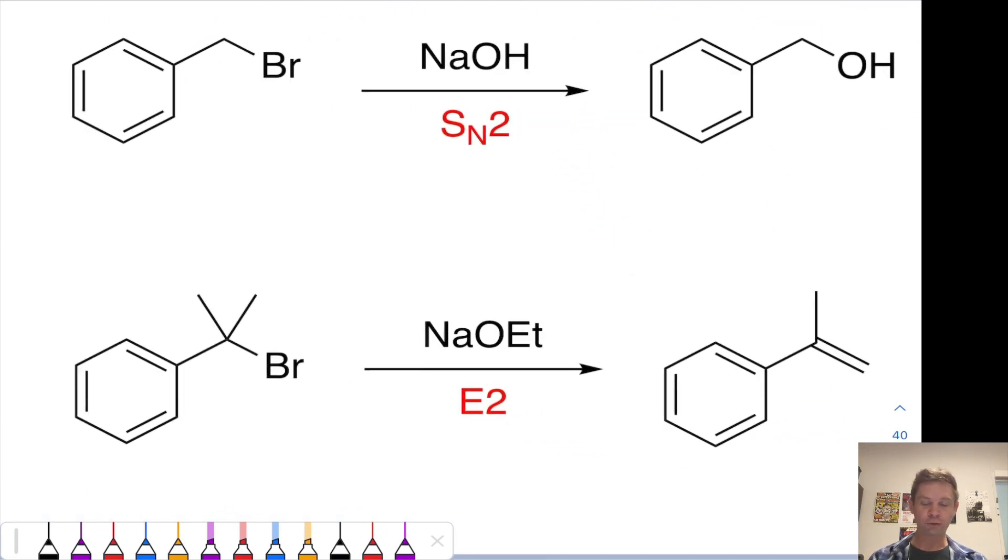E2 eliminations are also rapid at benzylic positions. So here, where we're using a stronger base, sodium ethoxide, this is going to involve E2 elimination, deprotonation at a beta carbon along with departure of the leaving group at the same time. And this leads to a similar styrene product via an E2 mechanism now, rather than E1.